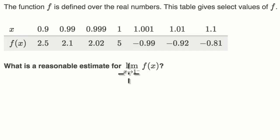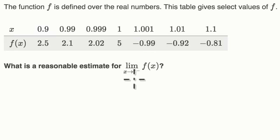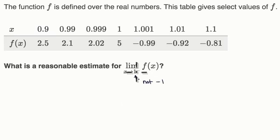The first thing that is really important to realize is when you see x approaches one and you see this little negative superscript here, this does not mean approaching negative one. Sometimes your brain just sees a one and that little negative sign there and thinks it must be a weird way of writing negative one. But it's not saying that.